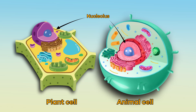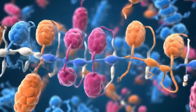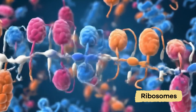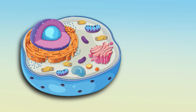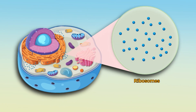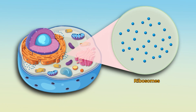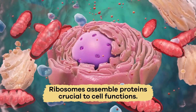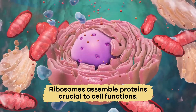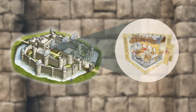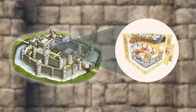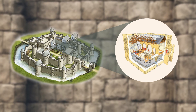The nucleolus is inside the nucleus and makes proteins called ribosomes. Ribosomes are the skilled craftspeople of the castle. They assemble proteins crucial to cell functions, just like artisans or builders create the tools and structures inside a castle.